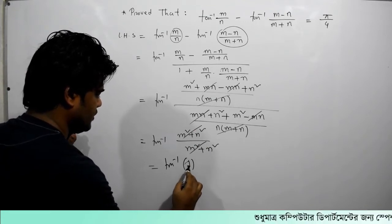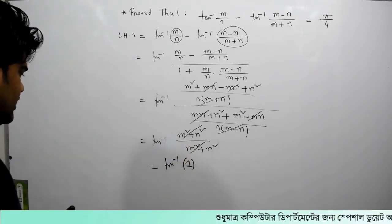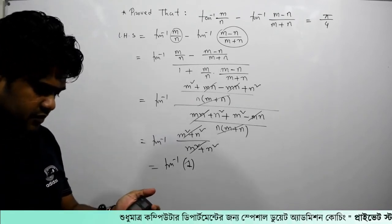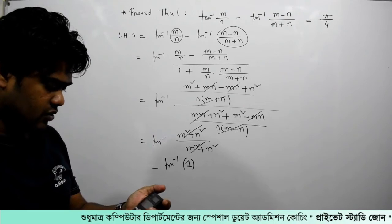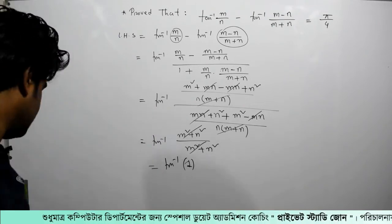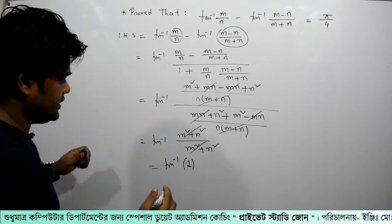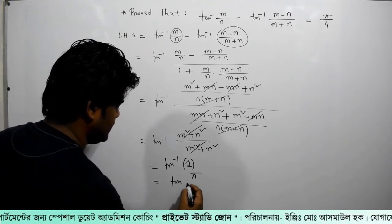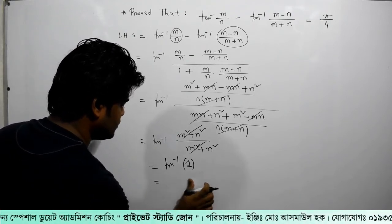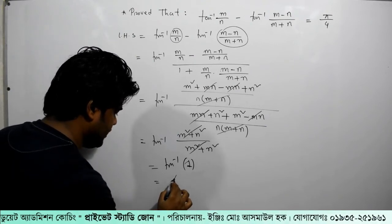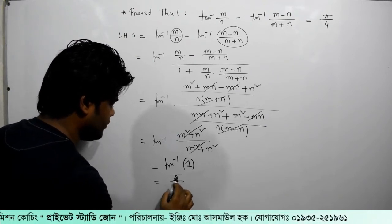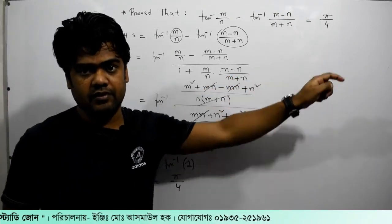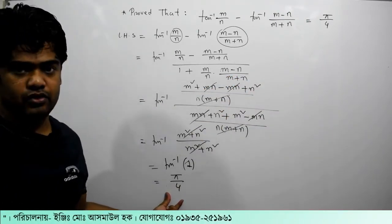What is tan inverse of 1? I will check: tan inverse of 1 is equal to 45 degrees. So tan inverse 1 equals 45 degrees, which is pi by 4. I am going to write the right-hand side: the answer is pi by 4.